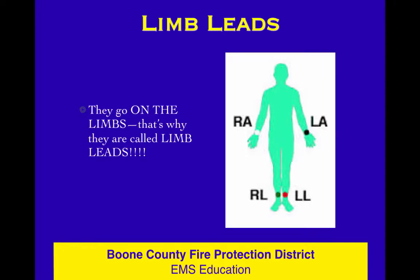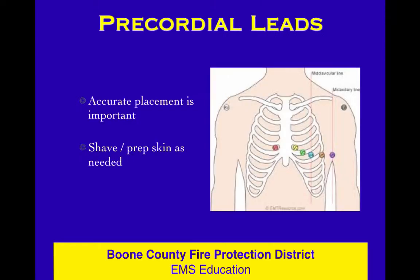Where do the wires go? The limb leads go on the limbs — that's why they're called limb leads. They should be on the arms and the legs. They don't have to be at the very distal end, but you really shouldn't get them too far up onto the chest. They should be on the upper arm — maybe the upper chest if you can find a non-hairy, non-dirty, non-greasy place. You'd like to minimize movement and tremor causing artifact. So let's try to put limb leads on limbs.